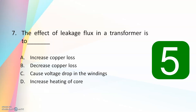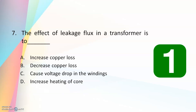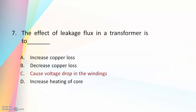Seventh question: the effect of leakage flux in a transformer is to — increase copper loss, decrease copper loss, cause voltage drop in the windings, or increase heating of the core. The answer is: it causes voltage drop in the windings. Leakage flux means some part of the flux from the primary is not reaching the secondary, so the induced EMF will be low, meaning there is a voltage drop.